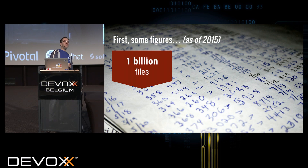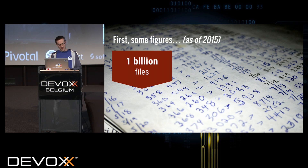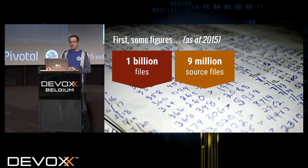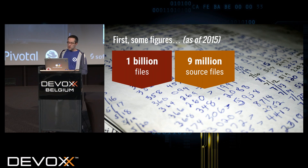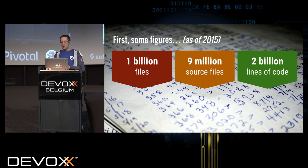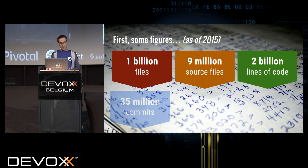There are one billion files in this single repository. Among those files — it's not just source files, there are also HTML or text files — but the real source files number nine million. There are in total more than two billion lines of code across all the languages that we use.